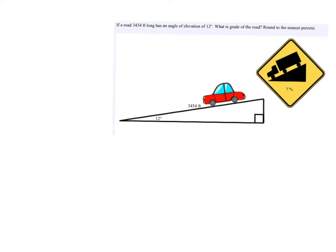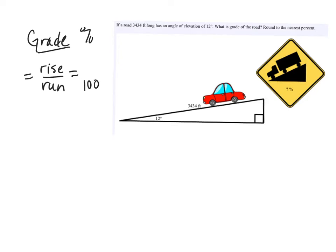Grade is just slope — you'll see this sign on really steep roads. It's a way to measure slope. Slope and grade are both rise over run. The difference is grade is a percent, so the run is always going to be compared to a hundred.